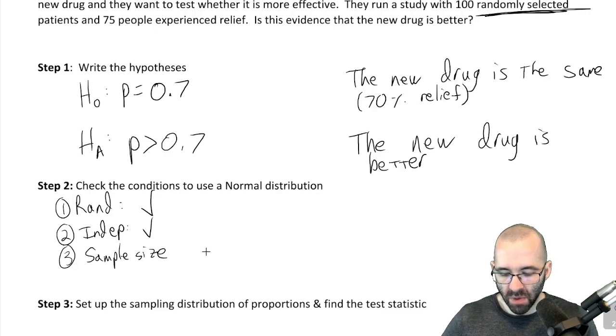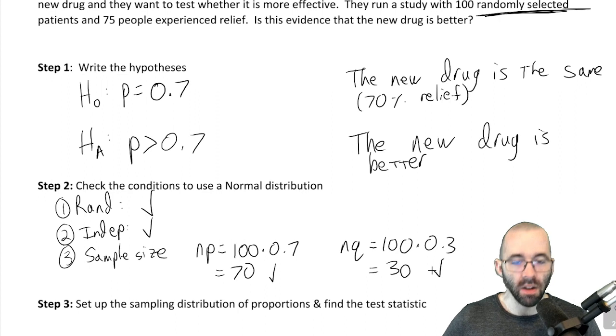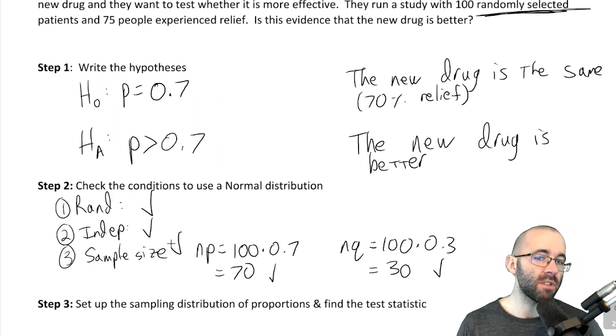And sample size: what is n times p? n was 100, p we're assuming to be 0.7. We would expect 70 people to experience relief. That's at least 10, good. And how many would we expect to not experience relief? Good, that's also at least 10. So all these conditions are satisfied.